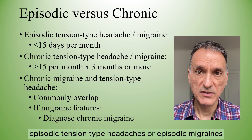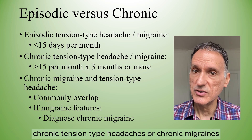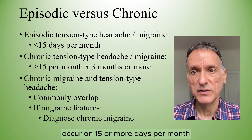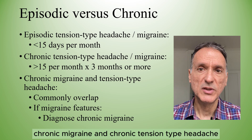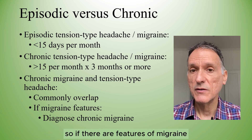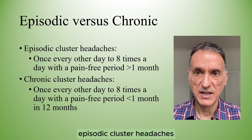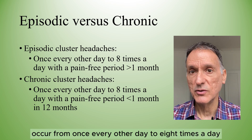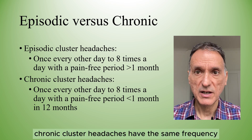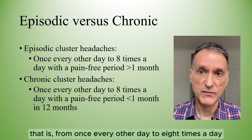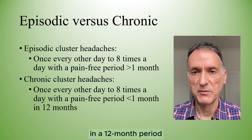Episodic tension type headaches or episodic migraines occur on fewer than 15 days per month. Chronic tension type headaches or chronic migraines occur on 15 or more days per month for more than 3 months. Chronic migraine and chronic tension type headache commonly overlap, so if there are features of migraine we will diagnose chronic migraine. Episodic cluster headaches occur from once every other day to 8 times a day with a pain-free period of more than 1 month. Chronic cluster headaches have the same frequency but with a pain-free period of less than 1 month in a 12-month period.